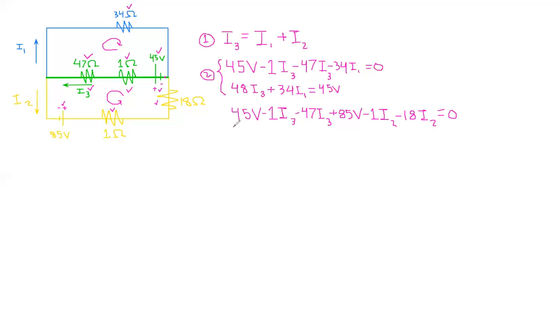And then again, when you combine like terms and move everything around the way you want to, you get 48 I3 plus 19 I2 equals 130 volts. So this is how we got our third equation. So when I end up solving for I1, I2, and I3, it's easiest for me if I rewrite all my equations in the same kind of format.